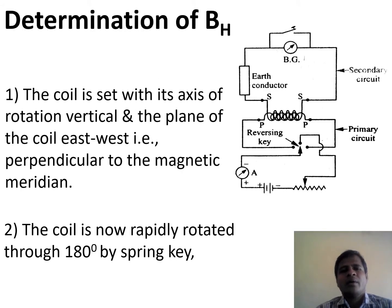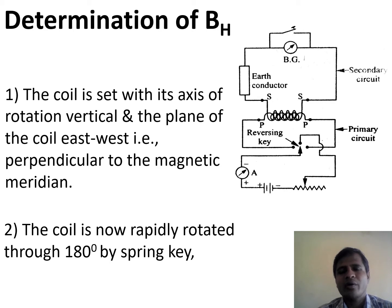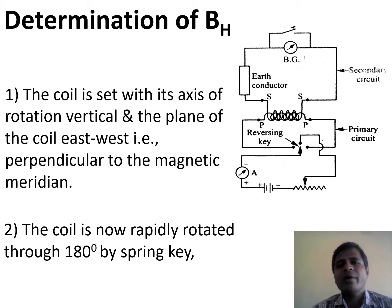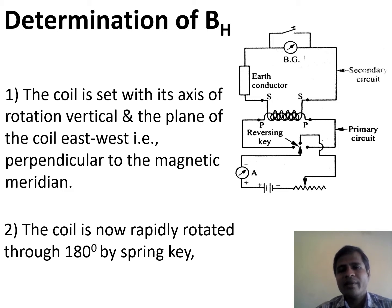To determine the horizontal component of Earth's magnetic field, we have the circuit diagram. In the circuit diagram, the ballistic galvanometer is connected on top, and across it a tapping key is connected which is used for charging and discharging. One end of the ballistic galvanometer is connected to the earth conductor, and the other end is connected to the secondary coil, then to the primary coil, then to one of the commutator keys.